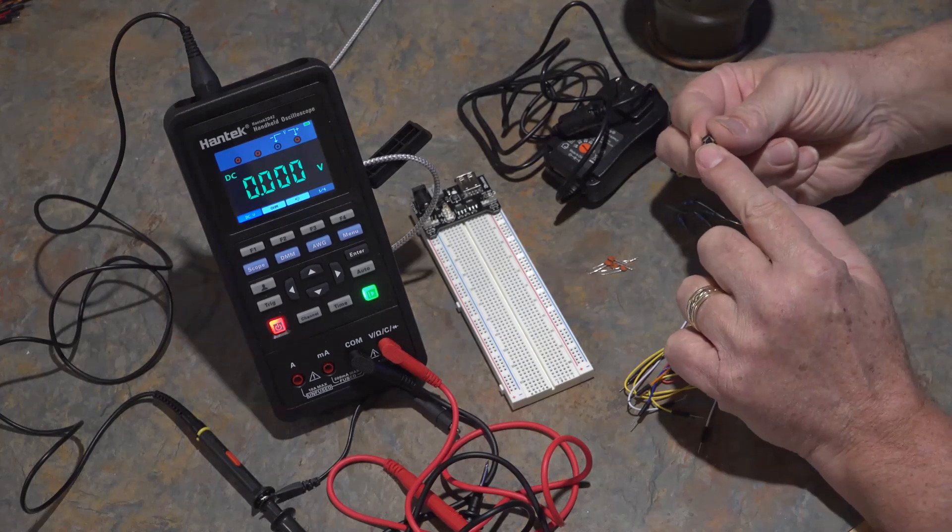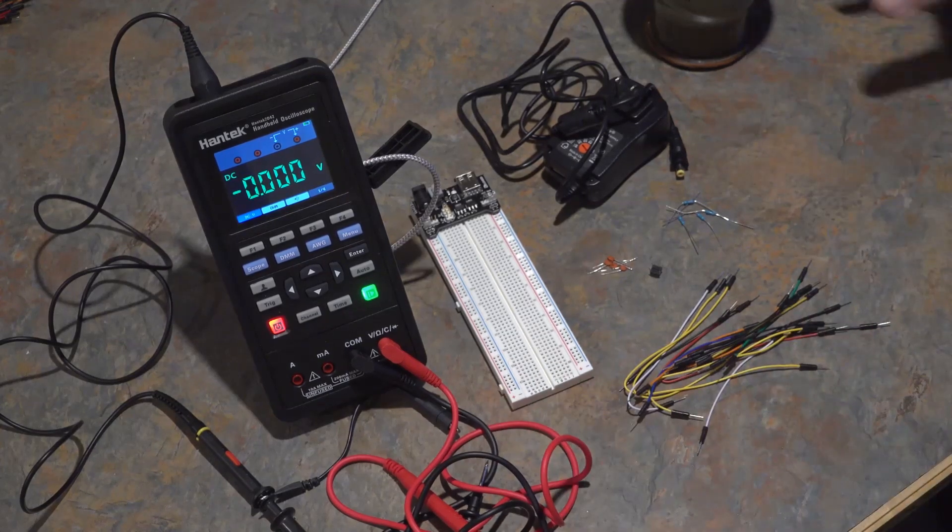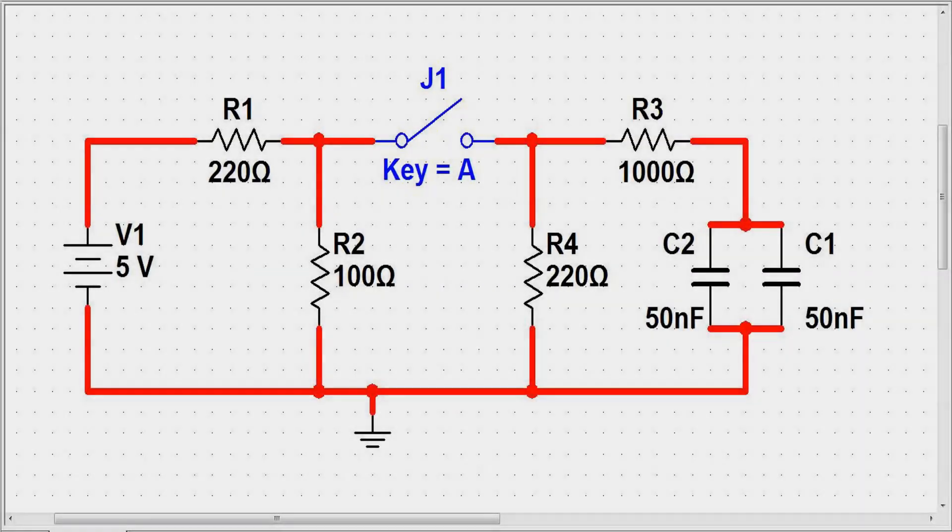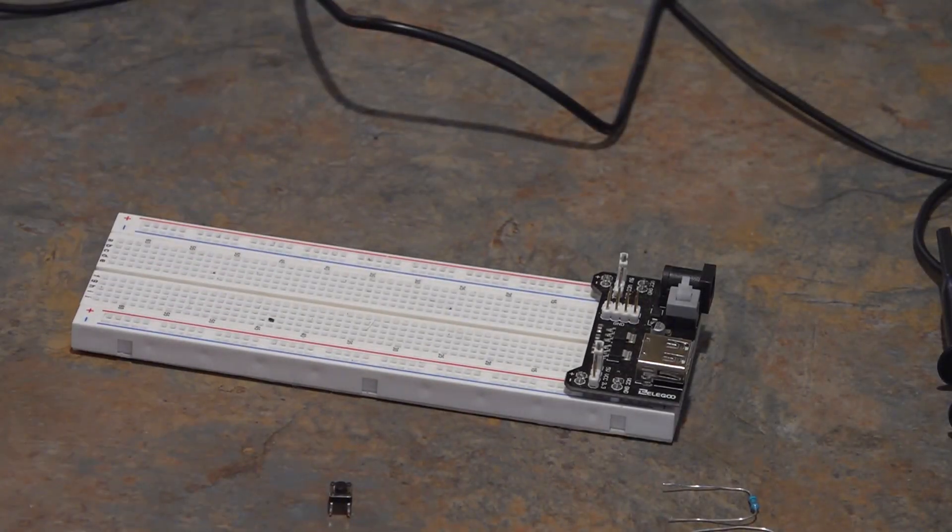Here's my Multisim drawing. You can see I'm using 5 volts. J1, or Key A, is going to be my charge-discharge switch, and I'm using two capacitors in parallel to give me 100 nanofarads. Alright, so let's build a circuit.